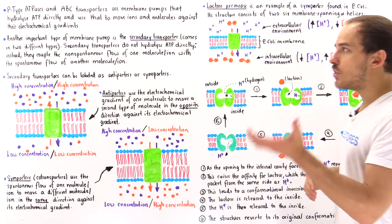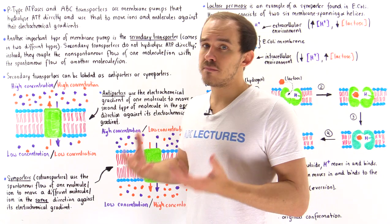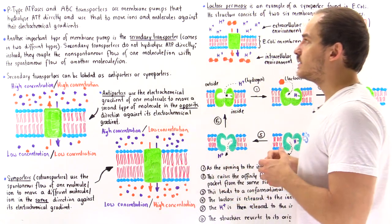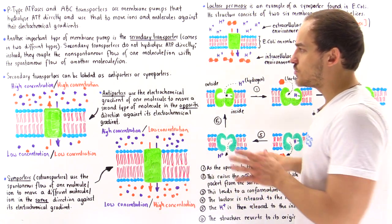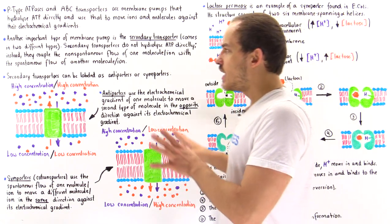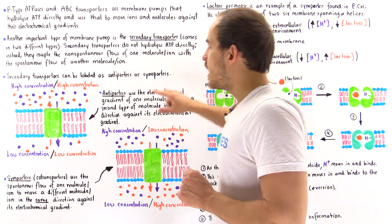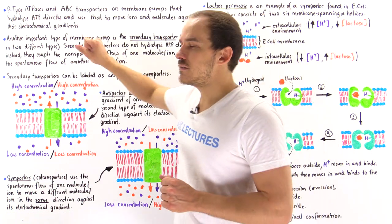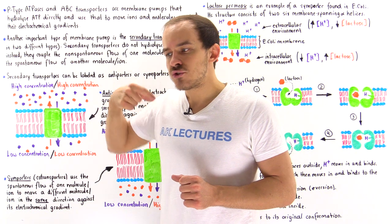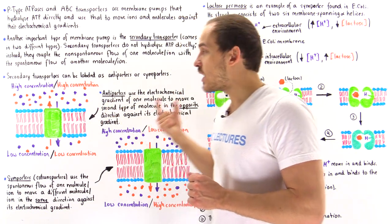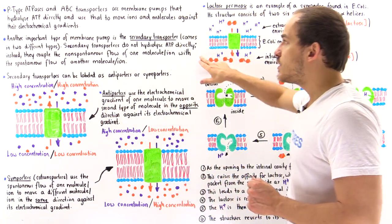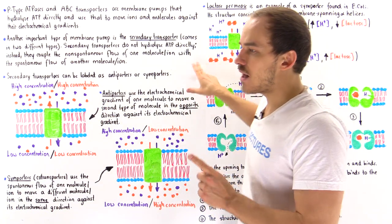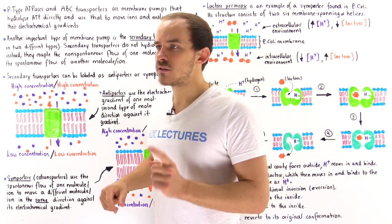Another important category of membrane pumps are the secondary transporters. As we'll see in just a moment, there are two types. Secondary transporters are transmembrane pumps that do not actually break down ATP molecules directly.